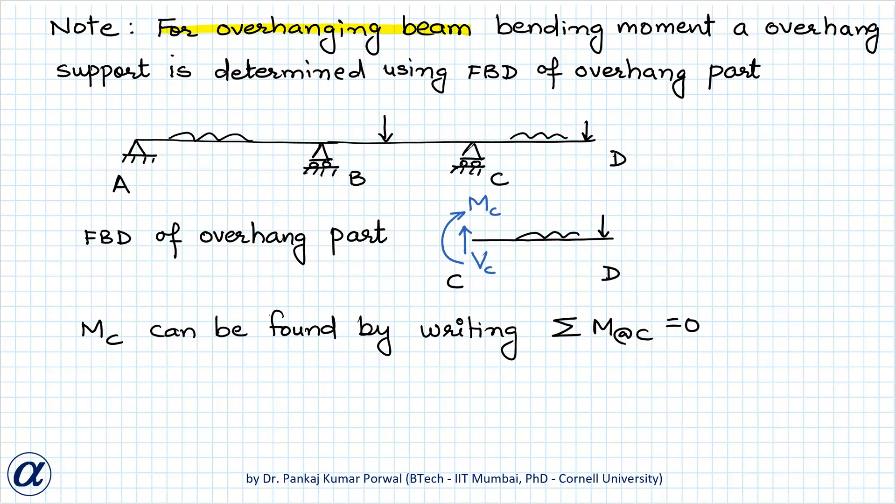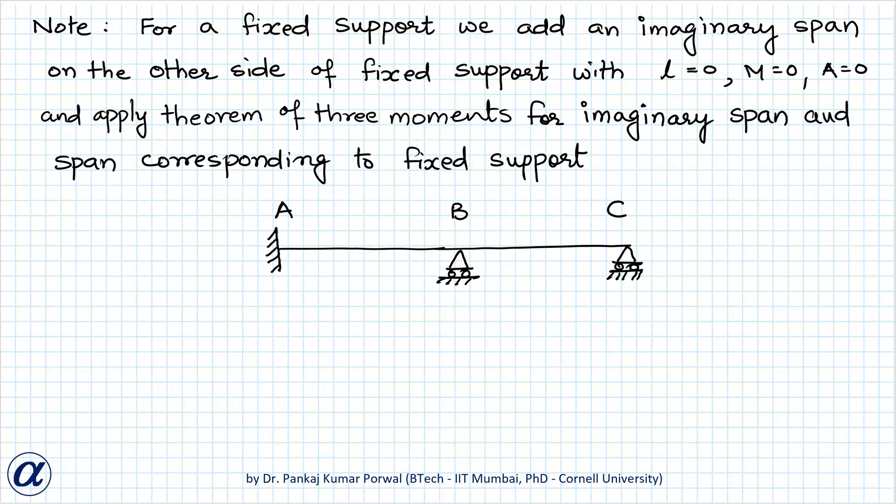So, next for overhanging beam the bending moment at overhang support can be determined using FBD of overhanging part. For example, in this beam ABCD the part CD is overhanging. So, if I consider free body diagram of overhang part that is of part CD then using this free body diagram if I write the moment equilibrium equation about point C then the bending moment MC at C can be obtained.